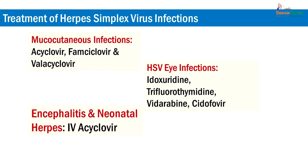Treatment is available for herpes simplex virus infection in the form of various antiviral drugs. For mucocutaneous infections, acyclovir, famciclovir, and valacyclovir can be given. For HSV eye infections, idoxuridine, trifluorothymidine, vidarabine, and cidofovir can be used. For management of encephalitis and neonatal herpes, intravenous acyclovir is given.